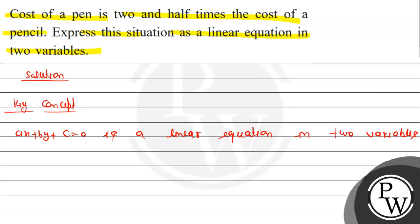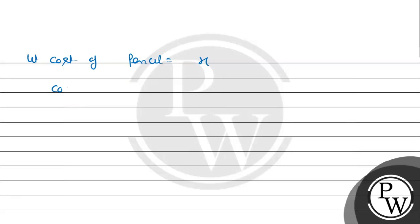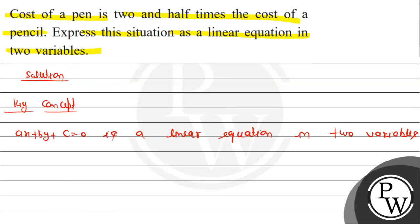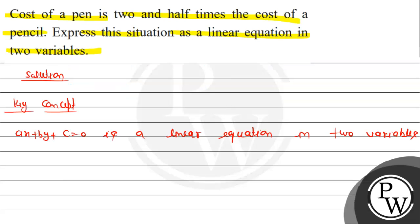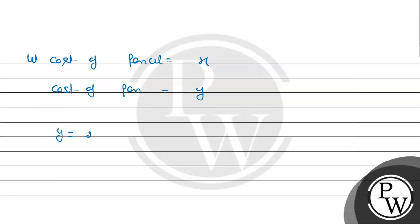So if the pencil cost is x, the cost of the pen equals y. From the question, the cost of pen is two and half times the cost of the pencil.